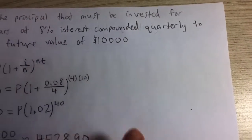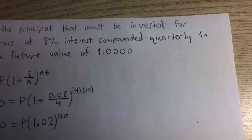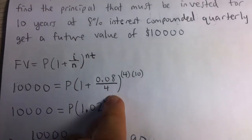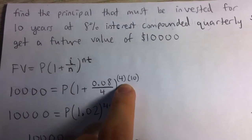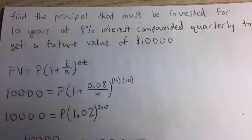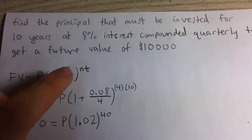It's compounded quarterly, so that means four times a year. So it's divided by four, raised to the four times 10 power, because we have 10 years, so that's t.